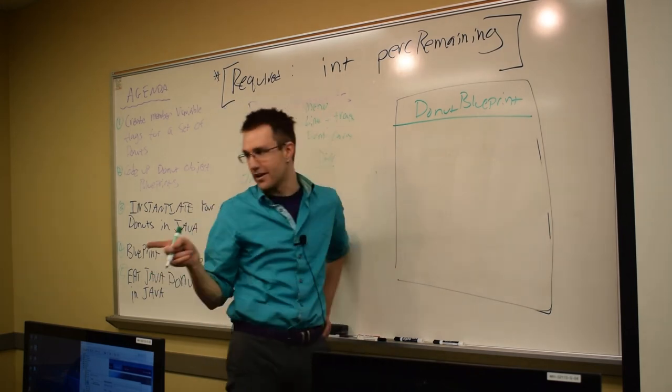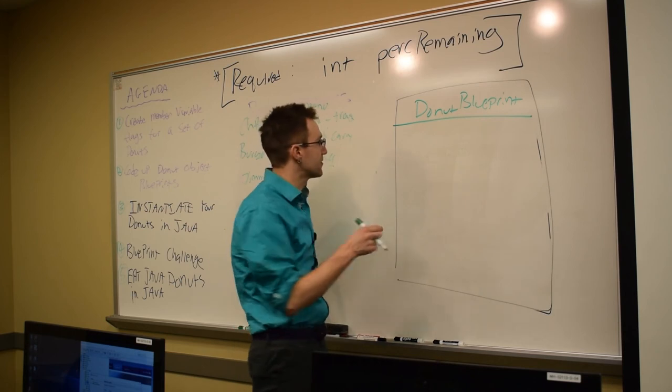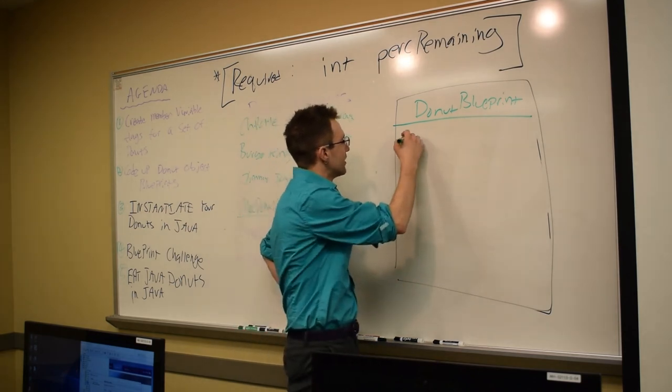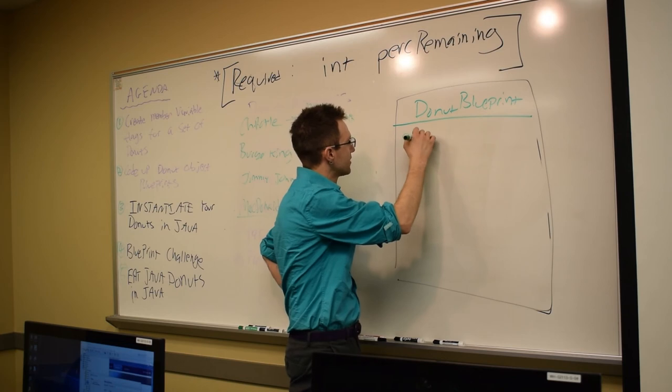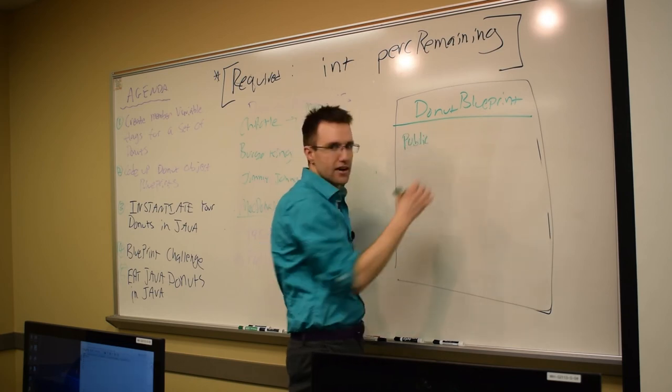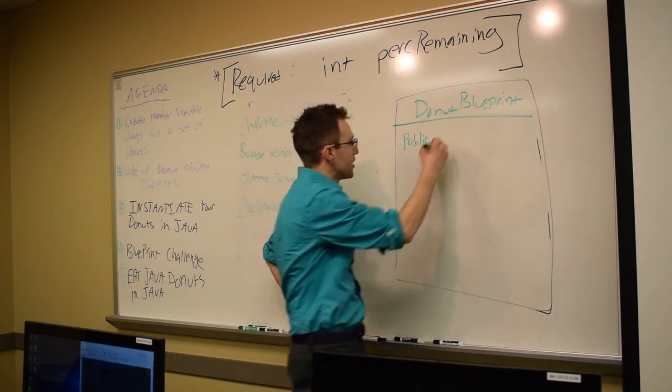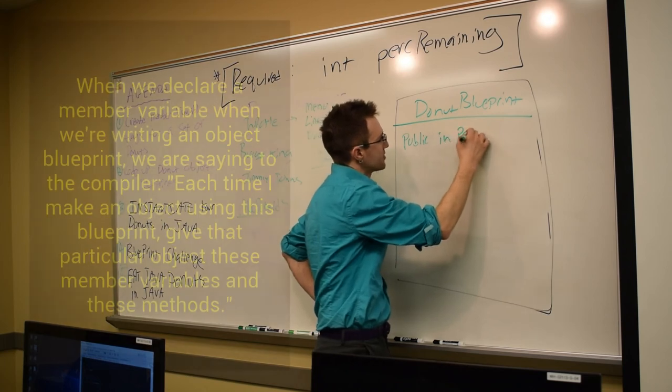We learned this last time. They were static. Yes, member variables. So what we're going to say is, we'll say, for now, we're going to say public, not static, public int purse remaining.